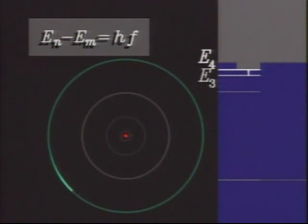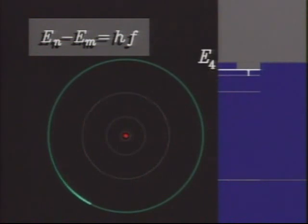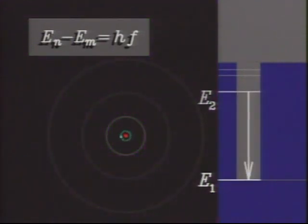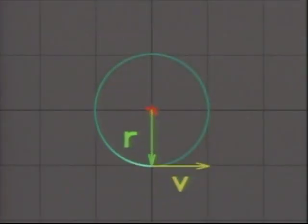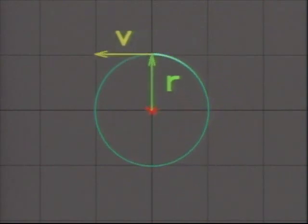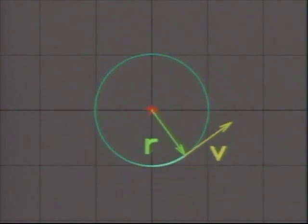Bohr couldn't say why such special orbits should exist, but he knew that without them there'd be no hope of explaining spectral lines. He also knew that in assuming those special orbits, he was stepping beyond the physics of Newton and Maxwell and into the unknown. But there still was a problem. What would determine the sizes of those special orbits?